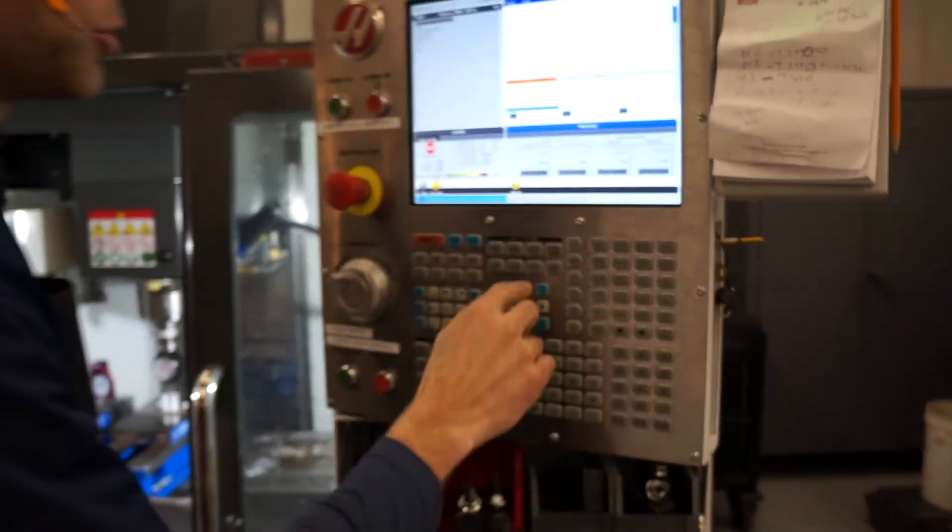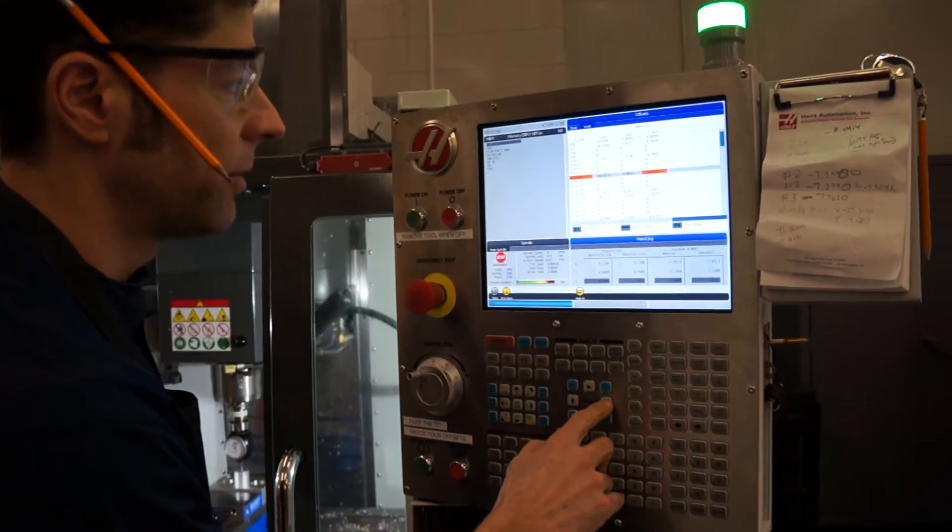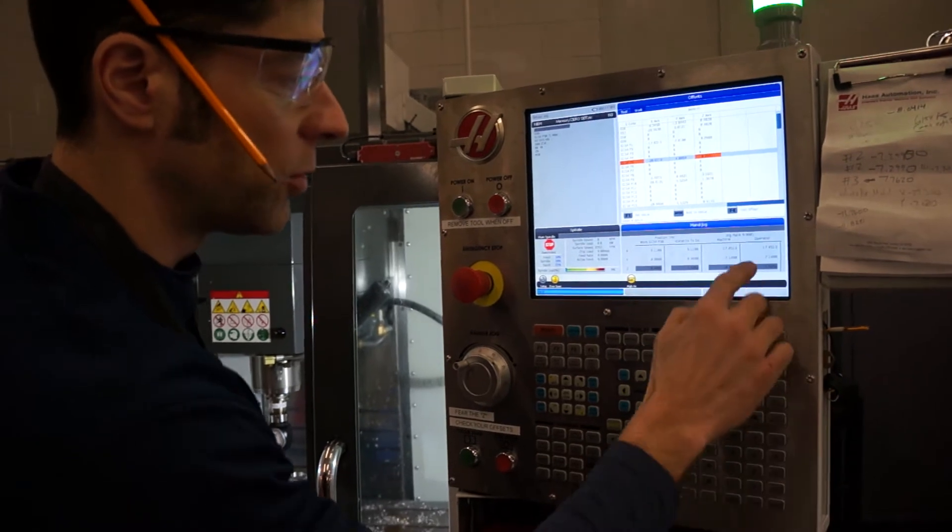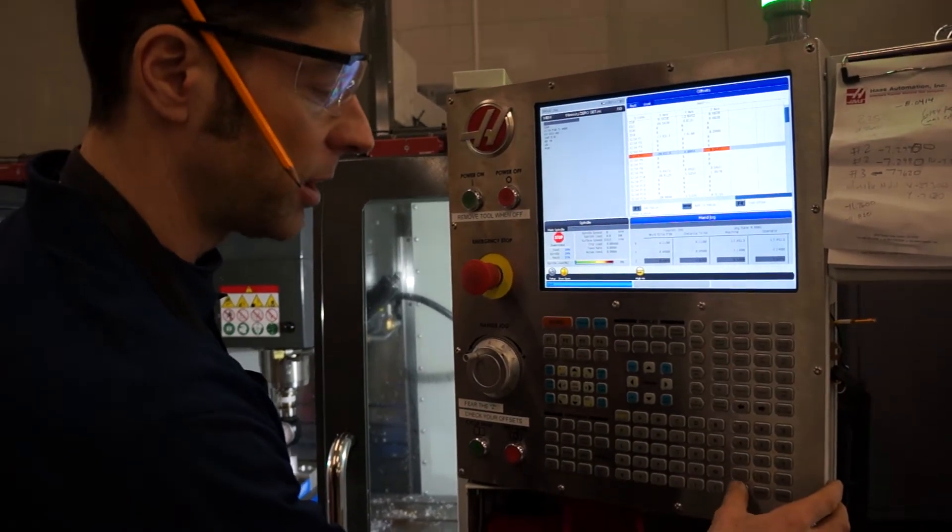We know that we are using G154, P5. So we are going to write this number in. So first, I'm going to clear the old number.